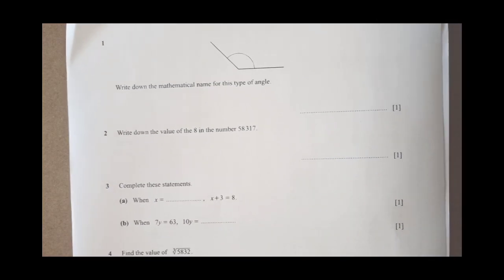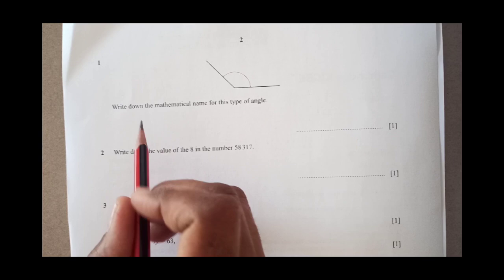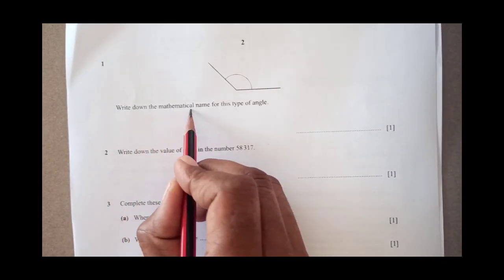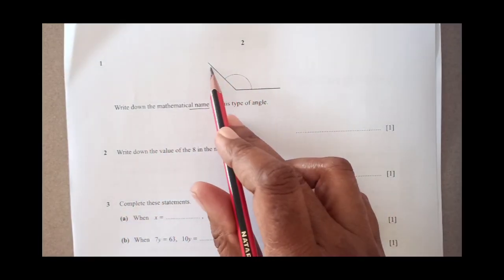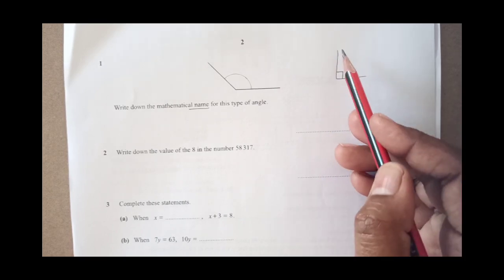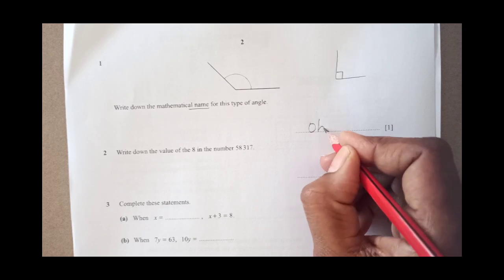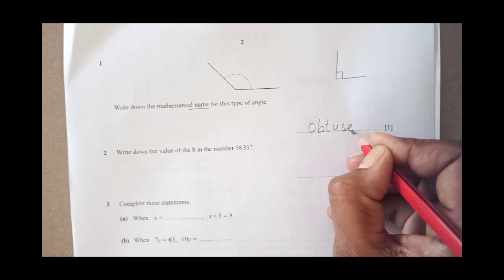Question number 1. You can see an angle here. Write down the mathematical name of this type of angle. This angle is greater than 90. 90 angle is like this, greater than is on this side. This is an obtuse angle. Greater than 90 is obtuse angle.